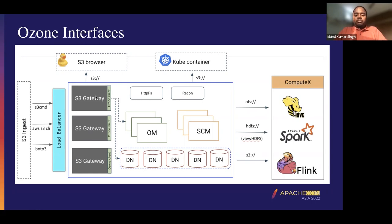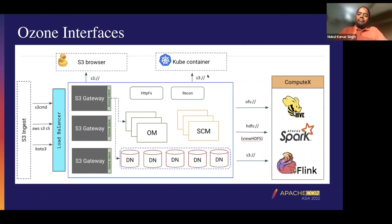Ozone can also be accessed via the S3 browser. We have embedded the Ozone S3 browser in our code — if you go to the S3 gateway endpoint, you should be able to browse a particular Ozone bucket. Kubernetes containers can also access Ozone using the S3 protocol, and we have also added support for Kubernetes containers to access Ozone using Goofy as a protocol.